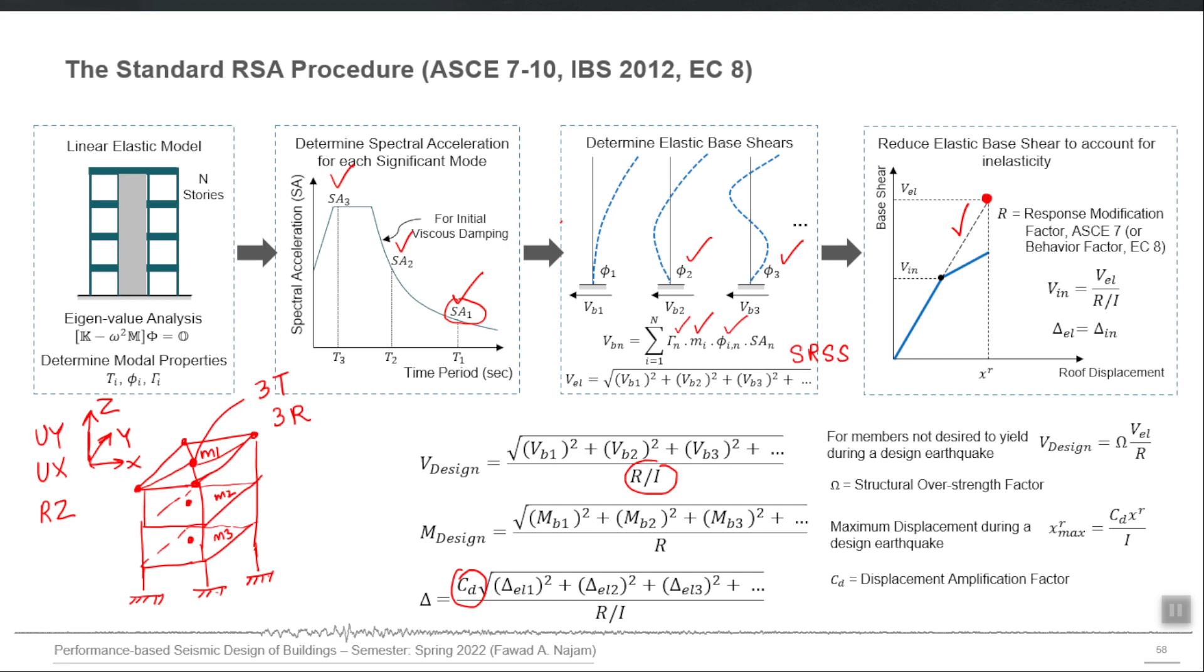Sometimes we are also interested in performing the dynamic analysis in the vertical direction also. In that case we may include uz also, the up-down movement of diaphragm. So if we use, for example, only horizontal direction analysis, then each degree of freedom of that master node, the number of degrees of freedom will be three.